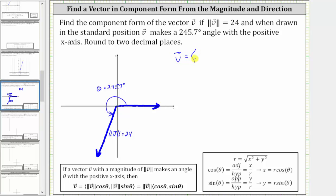For our vector v, the x-component is equal to 24 times cosine 245.7 degrees, and the y-component is equal to 24 times sine 245.7 degrees.